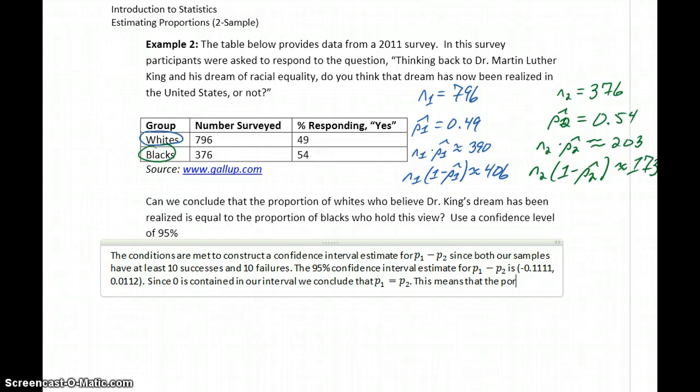This means that the proportion of whites and blacks who believe that Dr. King's dream has been realized are equal.